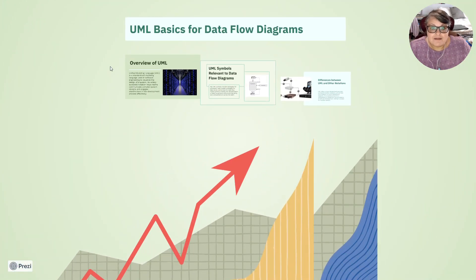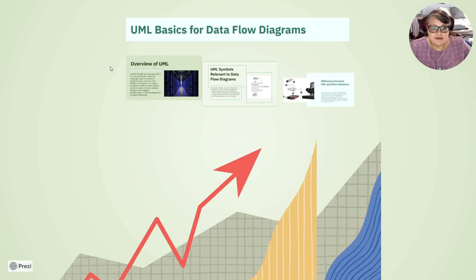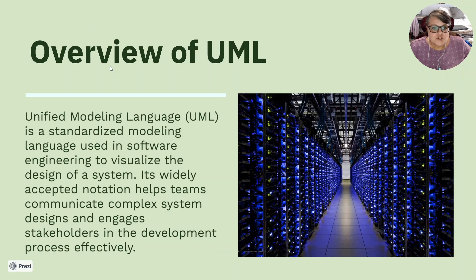UML, UML is what we use in these diagrams I made. The overview of UML, unified modeling language is standardized modeling language used in software engineering to visualize the design of a system. It is widely accepted notation that helps teams communicate complex systems and designs and engages stakeholders in the development of processes effectively.